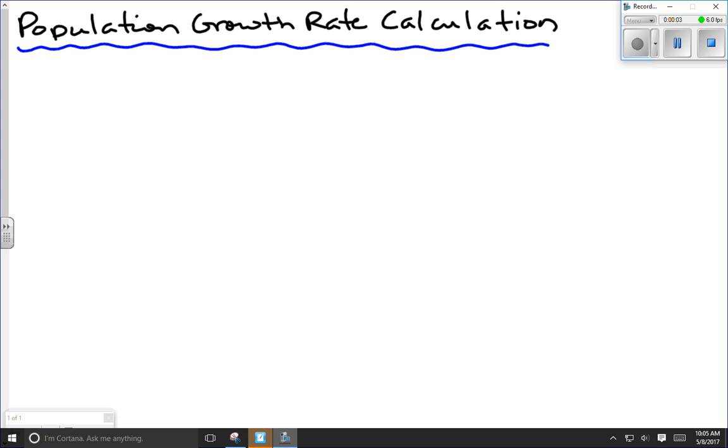This lesson is about calculating population growth rate. Given the formula, growth rate equals delta N, which is the change in population size, over delta T, which is the change in time.